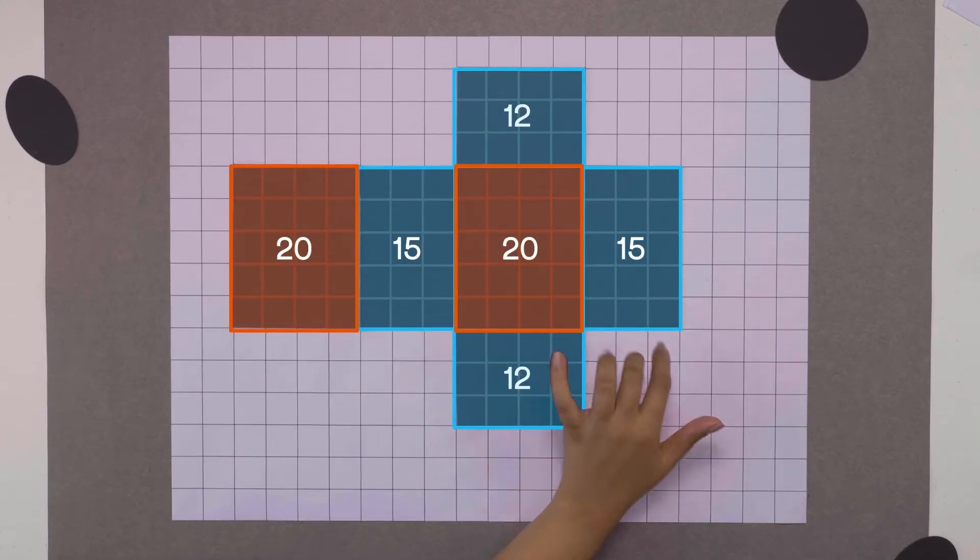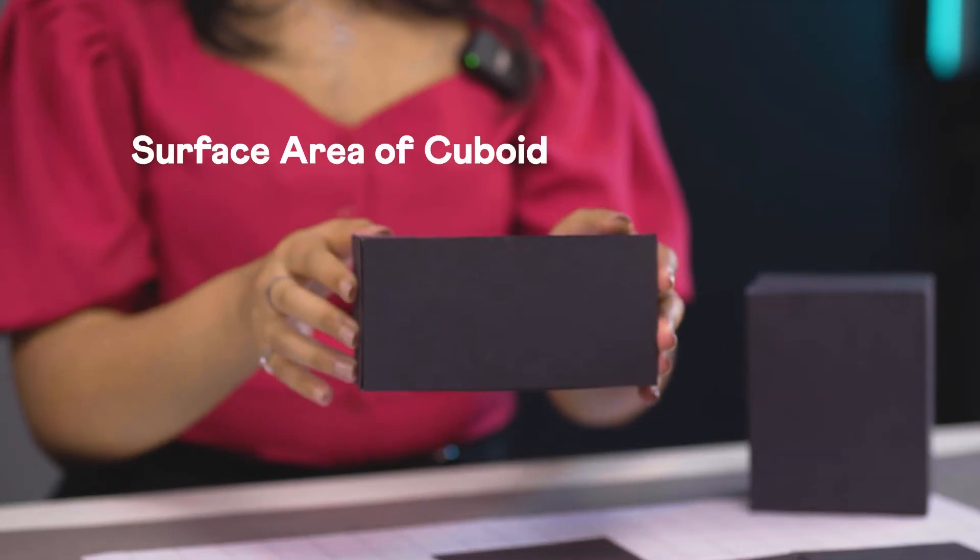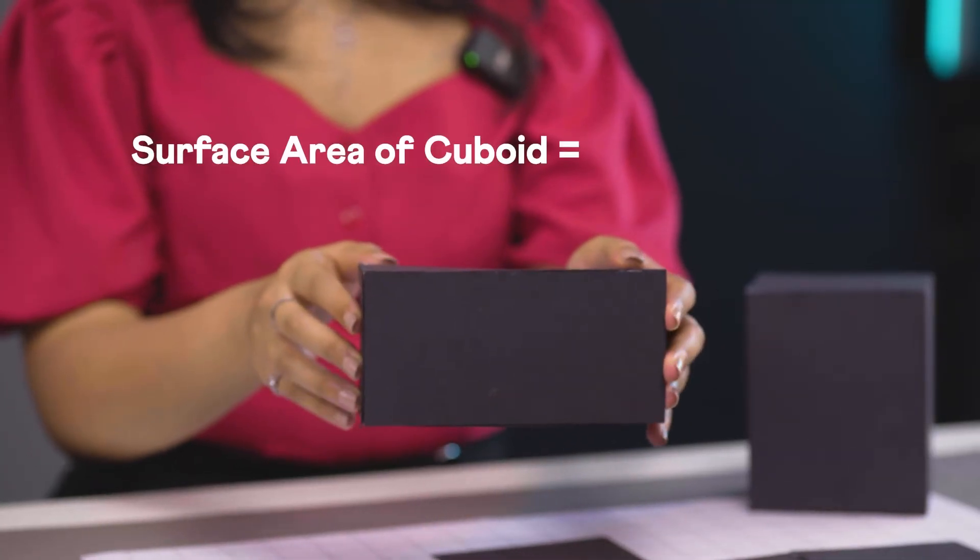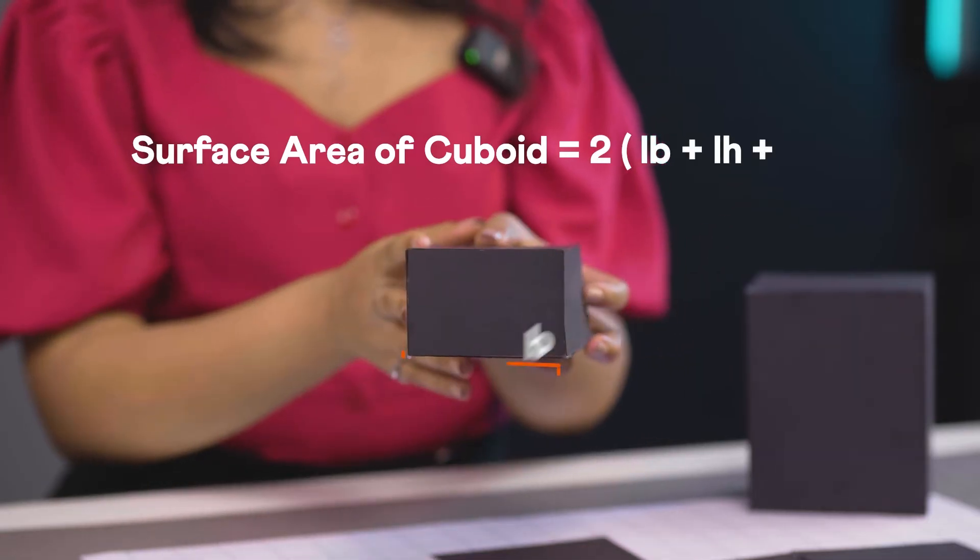So its area is 2 times 12 plus 20 plus 15, that's 94 square units. Similarly we can find the surface area of any cuboid as twice of length times breadth plus length times height plus breadth times height.